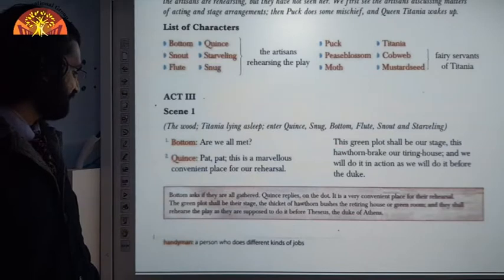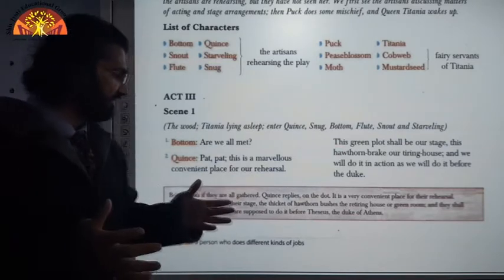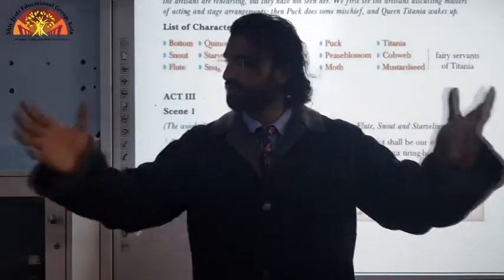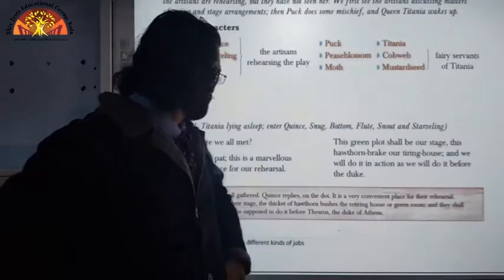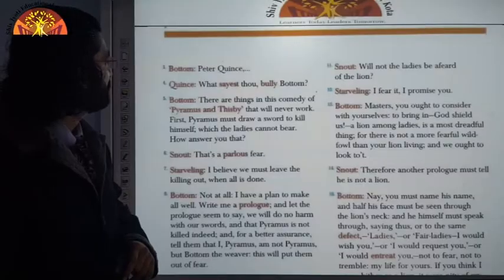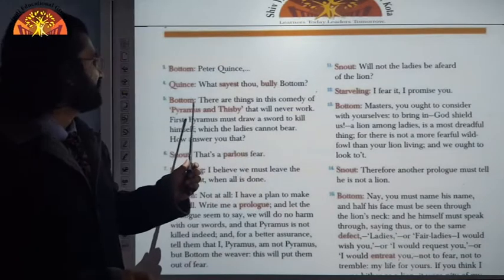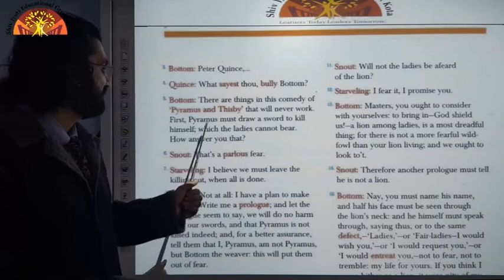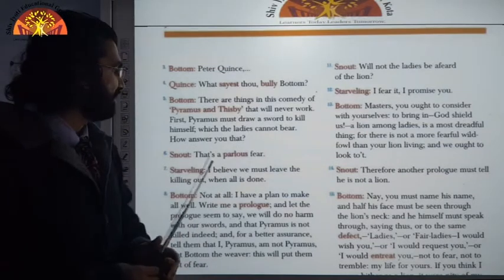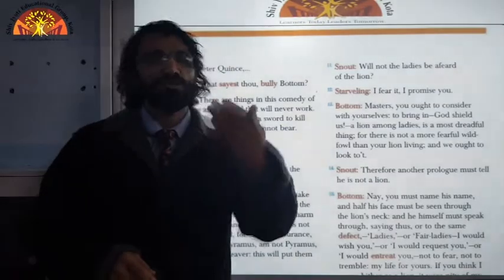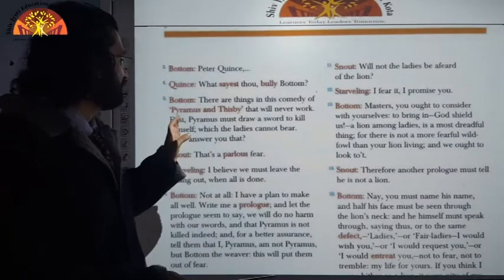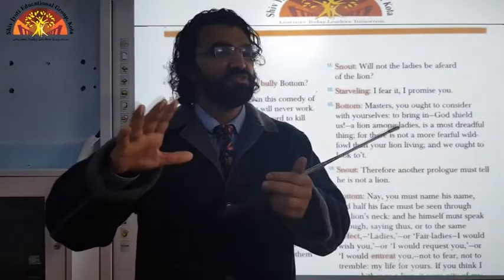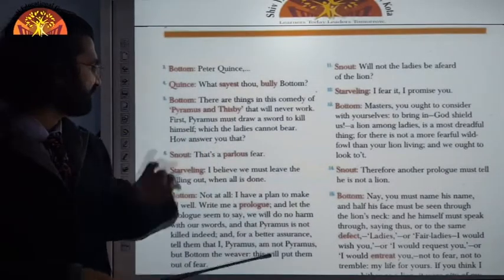Bottom raises a concern: 'There are things in this comedy of Pyramus and Thisbe that will never work. First, Pyramus must draw a sword to kill himself, which the ladies cannot bear.' This English may sound different — it is Old English, and William Shakespeare had a very distinctive style of writing. Pyramus and Thisbe is the story they want to perform: Pyramus is the boy and Thisbe is the girl, and they are lovers.